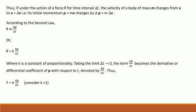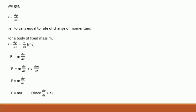Or, f is equal to k delta p by delta t, where k is a constant of proportionality. Taking the limit delta t tends to zero, the term delta p by delta t becomes the derivative or differential coefficient of p with respect to t, denoted by dp by dt. Thus, f is equal to k dp by dt. If we consider k is equal to 1, we get f is equal to dp by dt. That is, force is equal to rate of change of momentum.